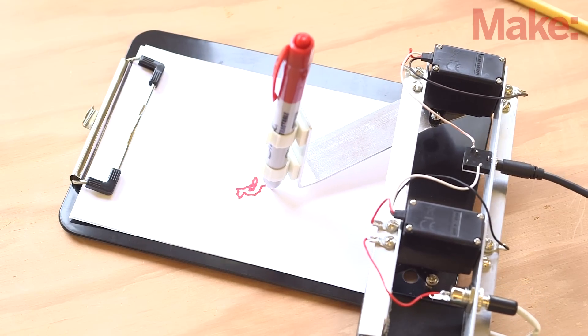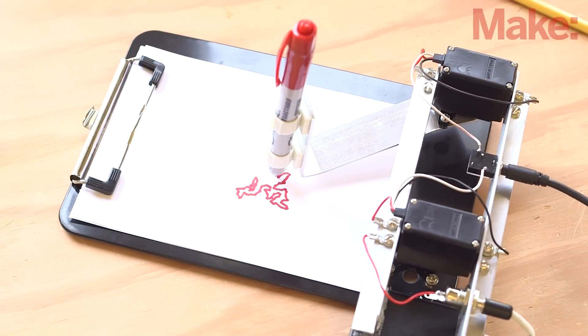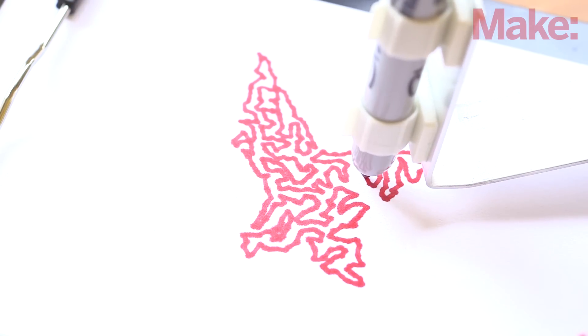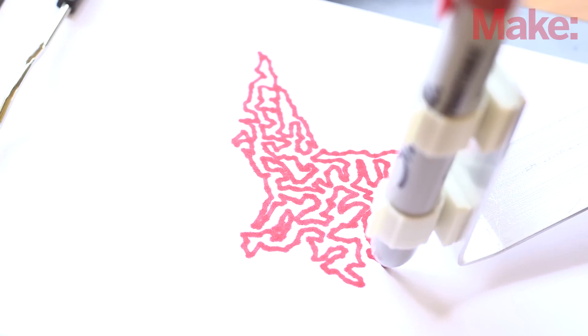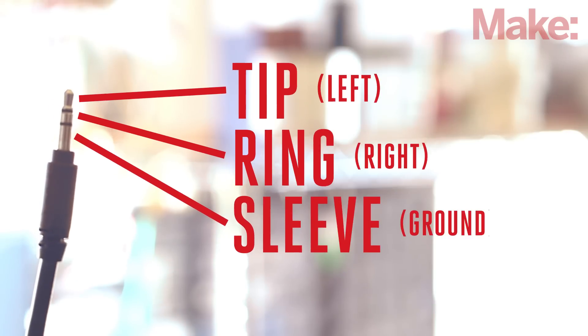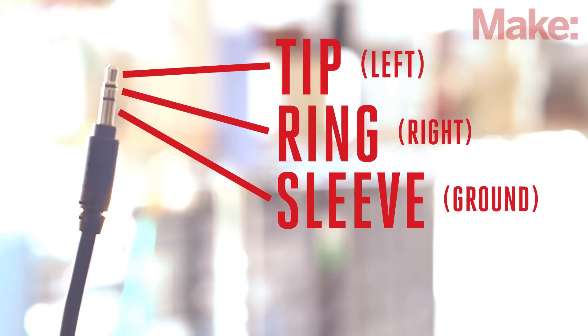A drawbot is a robot that can draw pictures with a pen. Typically, these are complicated systems that use stepper motors and microcontrollers. But the TRS drawbot by Shawn Michael Reagan is simple. It's controlled by any device with a headphone jack. TRS stands for the tip, ring, and sleeve of a stereo audio cable. This three-wire protocol is all you need to drive the drawbot.